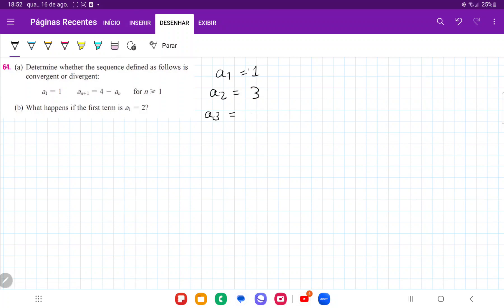Actually, I'm going to put this side by side. a4 is going to be 4 minus the previous, so 4 minus 1 is equal to 3.